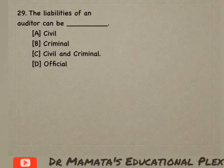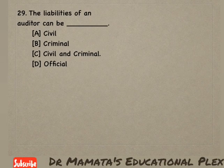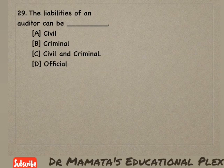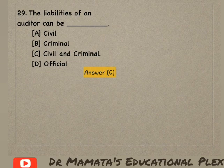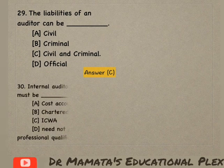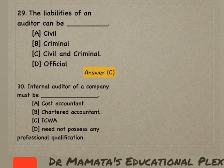Next question: The liabilities of an auditor can be — civil, criminal, civil and criminal, or official? Auditor ki liability kaun si ho sakti hai? Woh civil ya criminal koi bhi ho sakti hai. Option C, civil and criminal, is the correct answer.